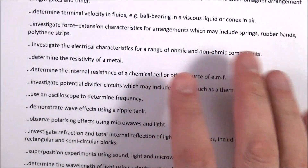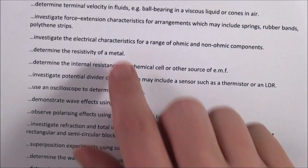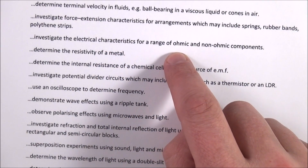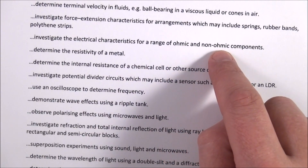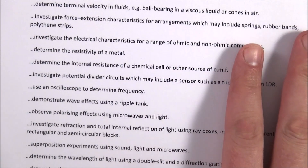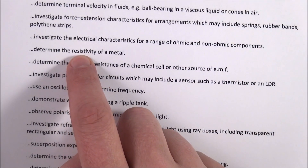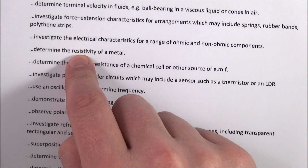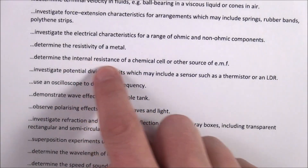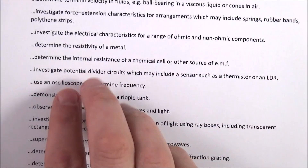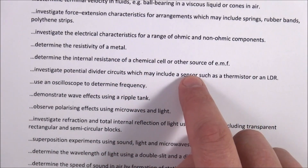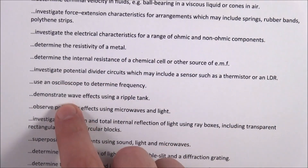In Module 4, there's content about ohmic and non-ohmic conductors — ohmic conductors include things like resistors, while non-ohmic tends to be things like filament lamps and LEDs. There's also how you determine the resistivity of a metal by measuring cross-sectional area, length and resistance, and the internal resistance of a chemical cell or other sources of EMF, which often involves plotting a useful graph, plus potential divider circuits.